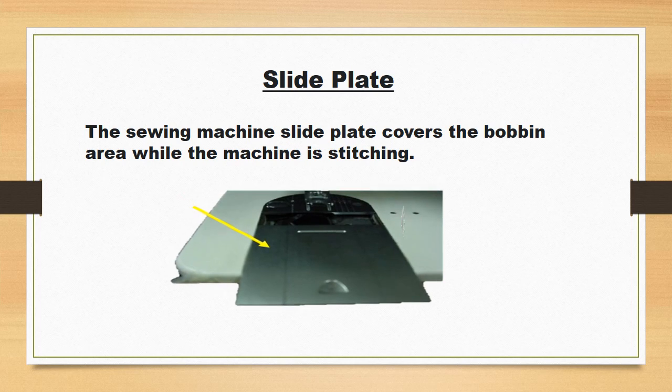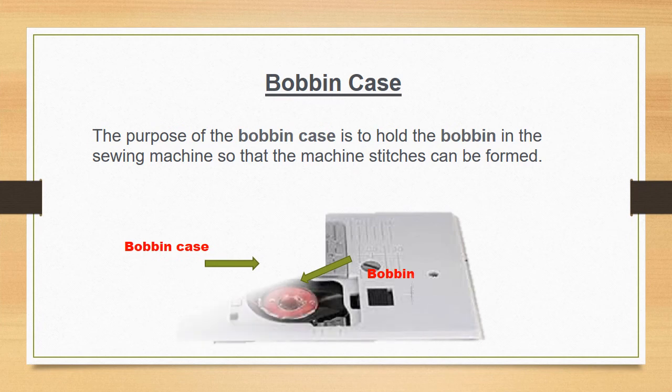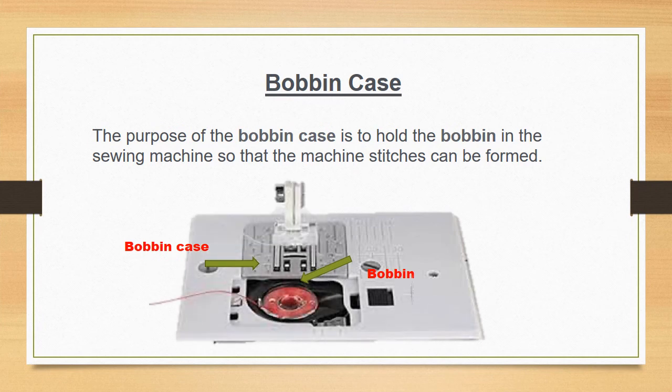Slide Plate. The sewing machine slide plate covers the bobbin area while the machine is stitching. Bobbin Case. The purpose of the bobbin case is to hold the bobbin in the sewing machine so that the machine stitches can be formed.